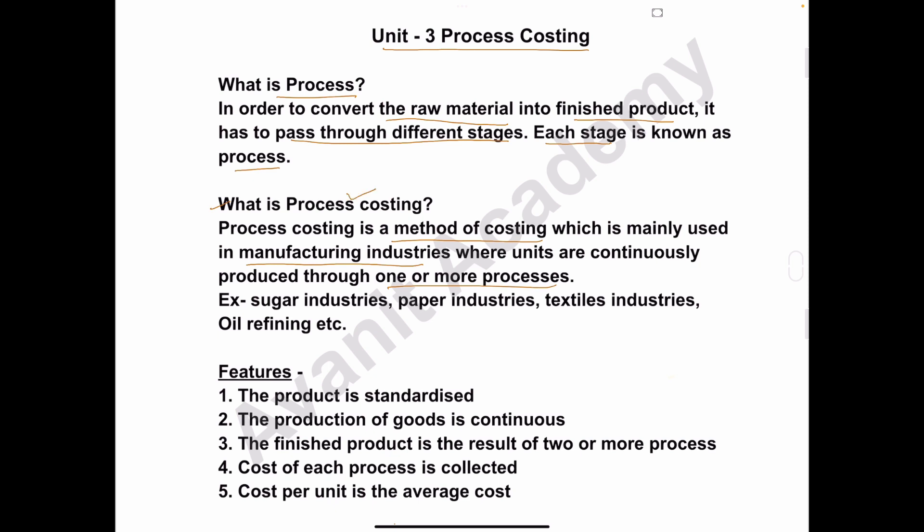Process costing is used in manufacturing industry. The industry which converts raw material into finished product uses the process costing method to find out or to calculate the cost of each process. Here are some examples: sugar industry, paper industry, textile industry, oil refining industry, etc.